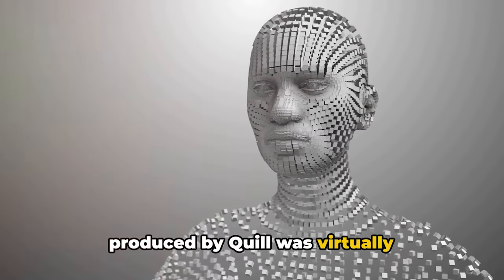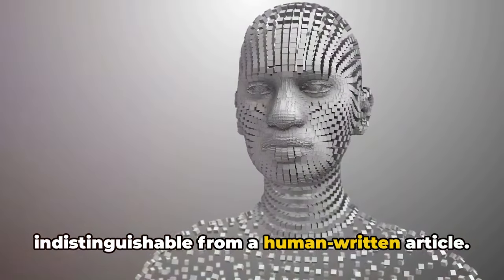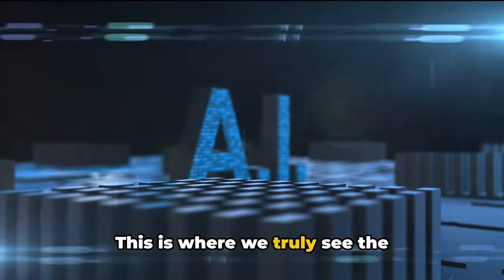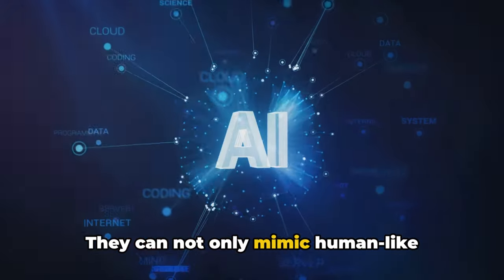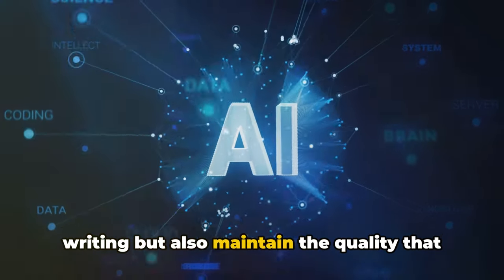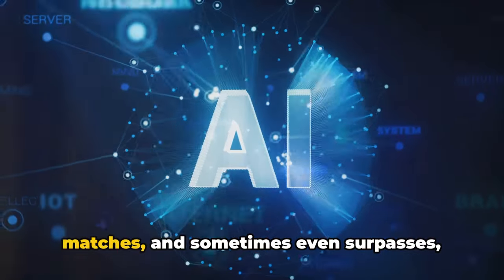Here's the real kicker: the output produced by Quill was virtually indistinguishable from a human-written article. This is where we truly see the sophistication of AI algorithms. They can not only mimic human-like writing but also maintain the quality that matches and sometimes even surpasses human standards.